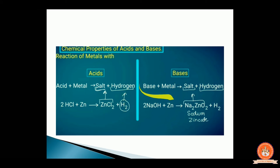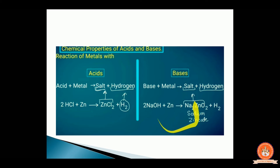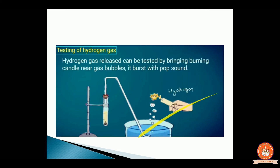When a base reacts with a metal, it also gives us salt plus hydrogen gas. For example, 2NaOH plus Zn gives us sodium zincate (Na₂ZnO₂), which is a salt, and H₂ as byproduct. The type of reaction occurring here is an oxidation reaction, because hydrogen is removed — removal of hydrogen is called oxidation.